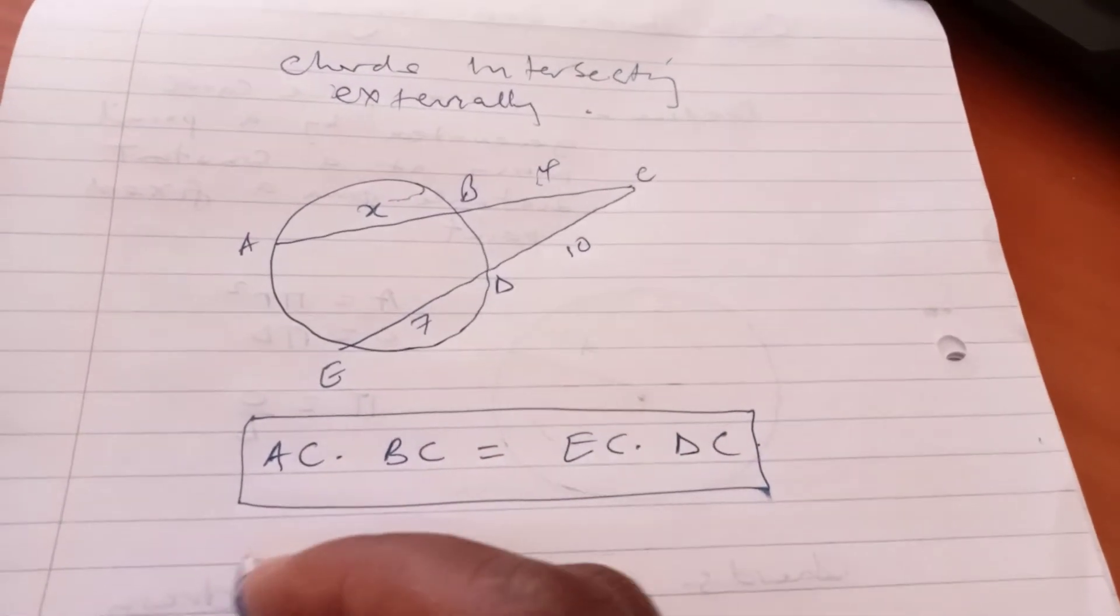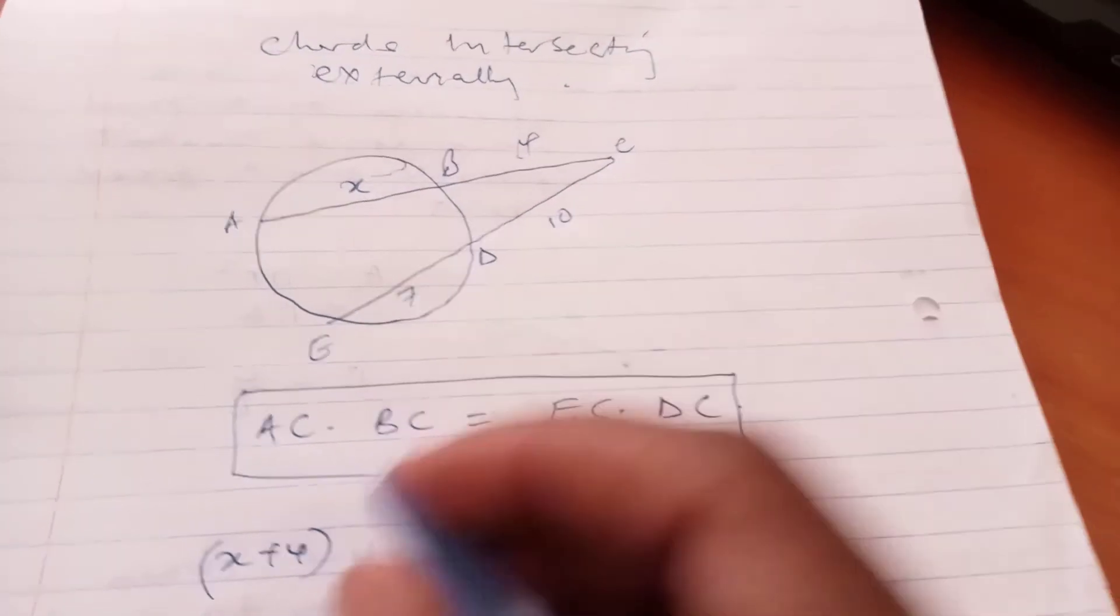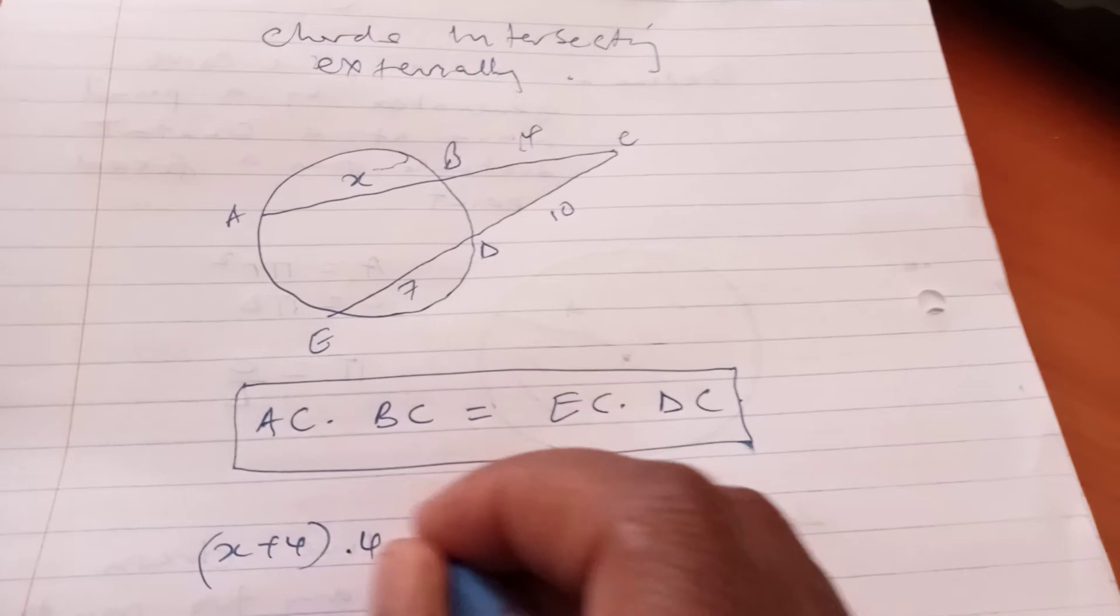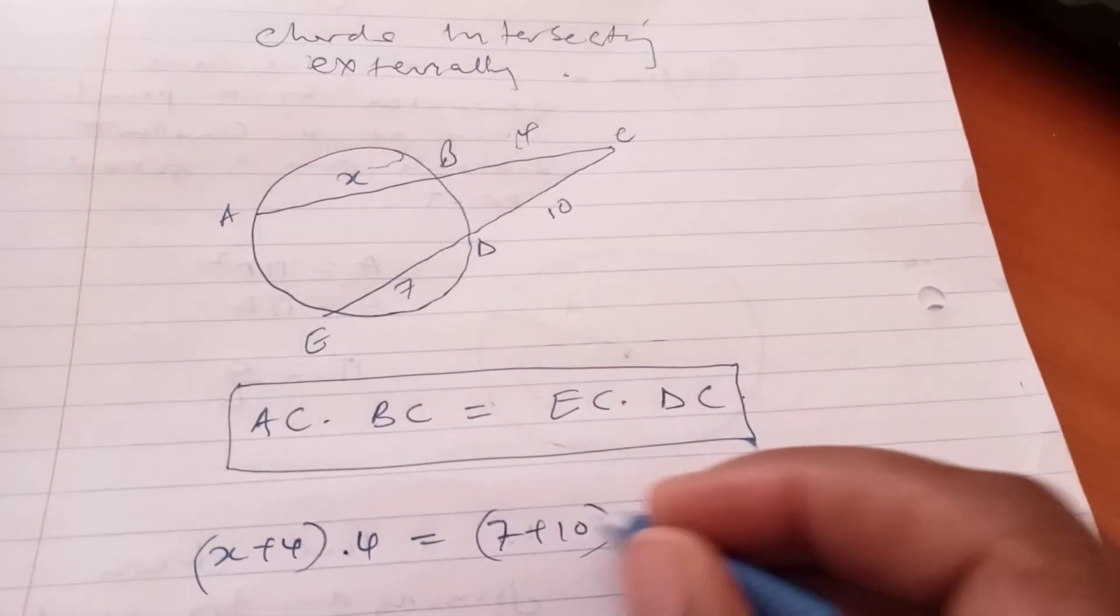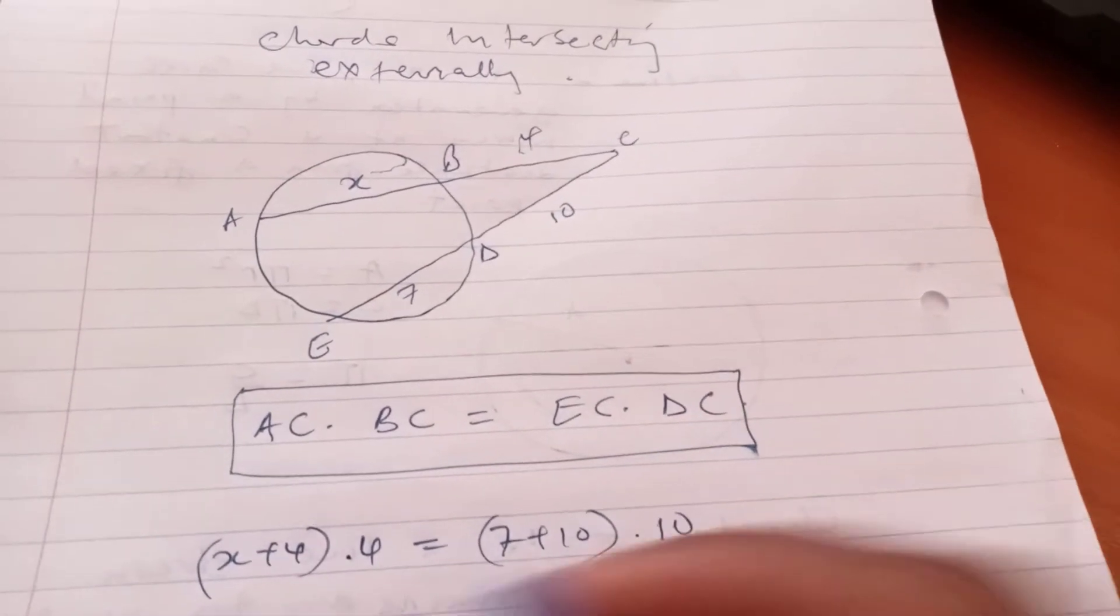So using this formula, it goes without saying that X plus 4, that is the whole length AC, times 4, equals 7 plus 10, that is the whole length EC, times DC which is 10.